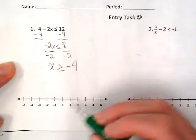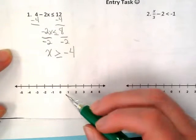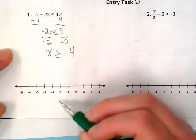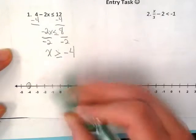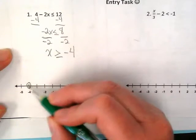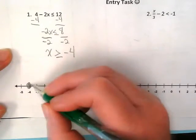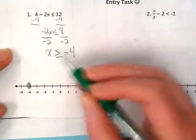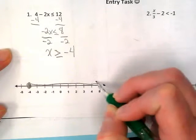We end up with 8 divided by negative 2 is negative 4. So to graph that, x is greater than or equal to negative 4. We circle it because of the or equal to, we're filling that in, and our graph goes the direction of the sign so it goes to the right.